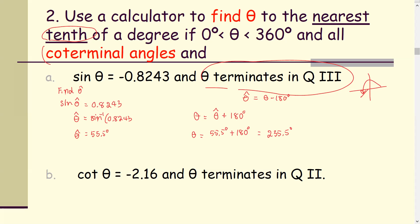For all co-terminal angles, the answer is 235.5 degrees plus 360 degrees multiplied by k, where k is an integer. Recall that 360 degrees is one full revolution.